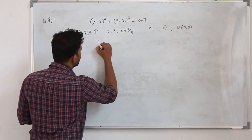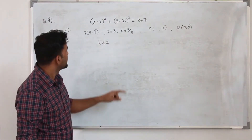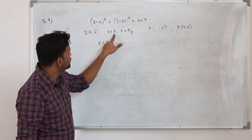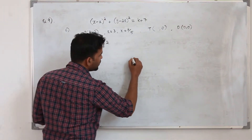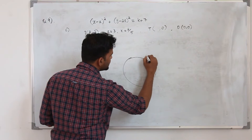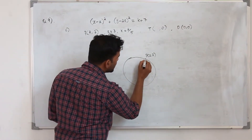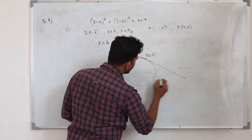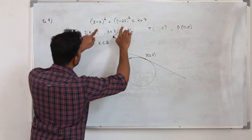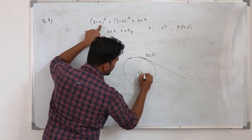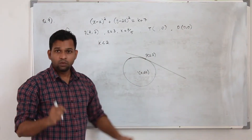Given that k is less than 2, we take the value from part B which is less than 2. k equals 3 is greater than 2, so k equals 2 upon 5. When we draw a tangent at point P, we need the center and the radius should be perpendicular to the tangent. The center is k comma 2k, so substituting k equals 2 upon 5 gives center at 2 upon 5 comma 4 upon 5.